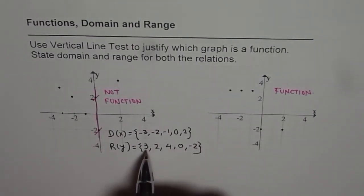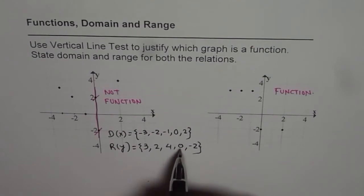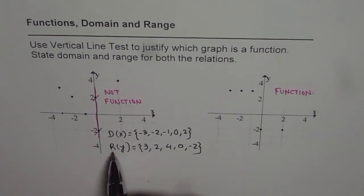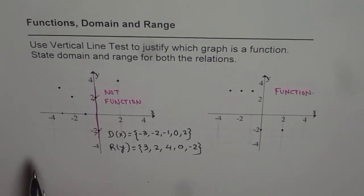So R(y) = {3, 2, 4, 0, -2}. Well, it could be written in proper order: {-2, 0, 2, 3, 4}. You will observe that the number of elements in the domain are five, and the number of elements in range are also five. So there are the same number of elements in both domain and range.